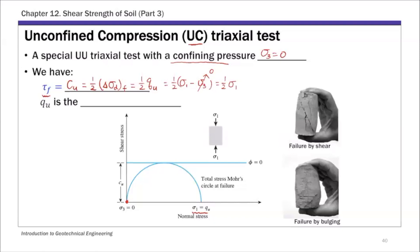So for the unconfined compression triaxial test: the shear strength τ_f equals the undrained shear strength, which equals one-half times q_u. Here q_u is called the unconfined compressive strength. Both c_u and q_u are important strength parameters for clay or cohesive soil, and from the equation: q_u equals 2 times c_u. This is a special type of UU test with zero confining pressure.